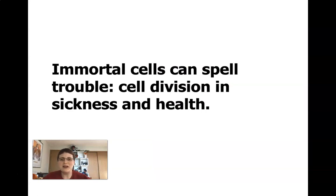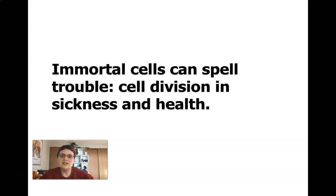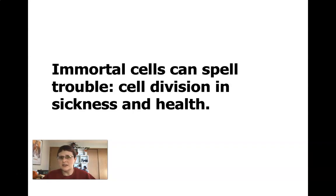Before we get into that, I want to introduce this section with basically how we get immortal cells — at least one way we get immortal cells, and I'll talk a little bit more about this when we get into mitosis. Immortal cells are cells that can just divide without end. Most cells have a cutoff on how many times they can divide before they are destroyed. Most immortal cells cause sickness and possibly death in most organisms, and those are generally considered cancer cells. Not all immortal cells turn into cancer cells, but a lot of them do, and we'll talk a little bit later about what else they need to be considered cancer.